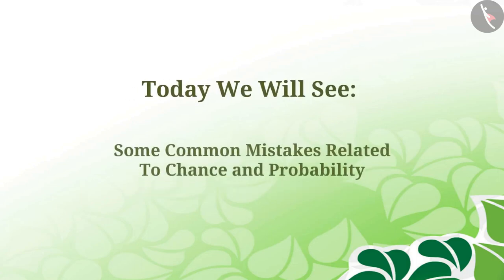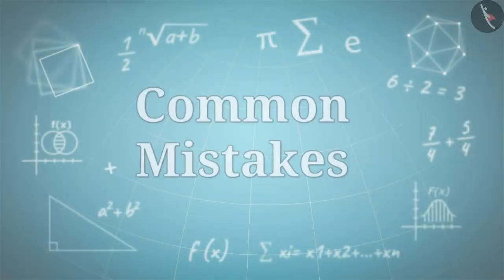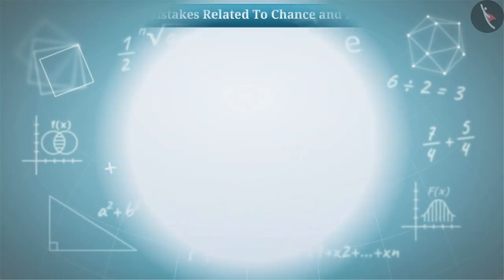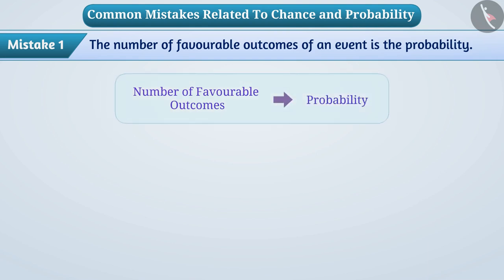Today we will see some common mistakes related to chance and probability. Mistake 1: Belief that the number of favorable outcomes of an event is the probability. Some children believe that the number of favorable outcomes of an event is the probability of that event.